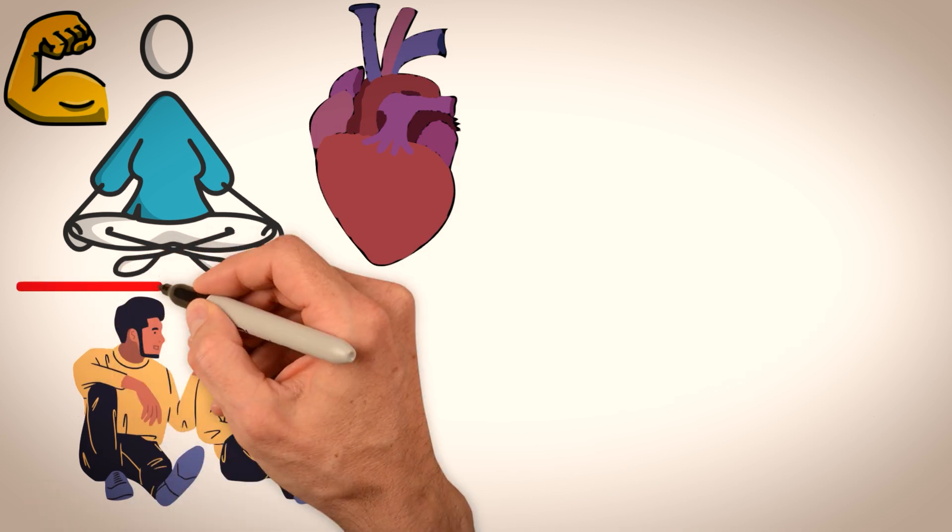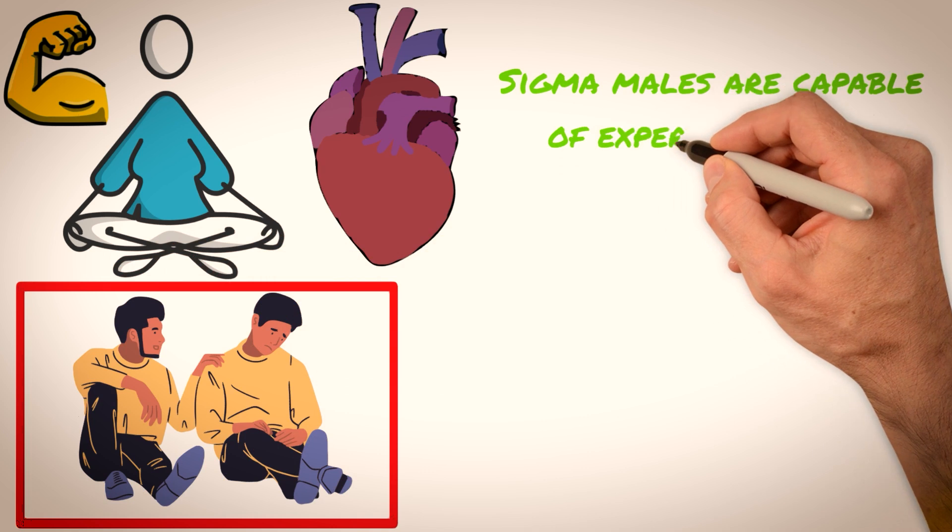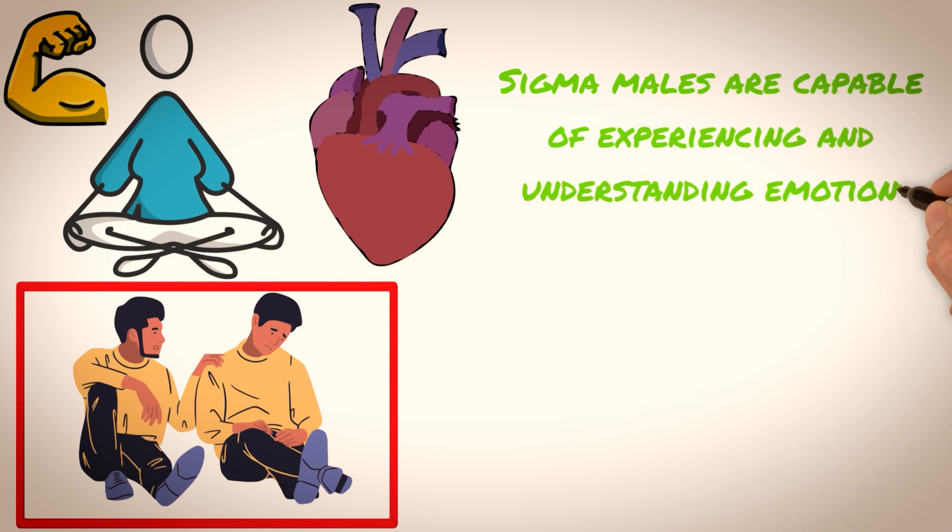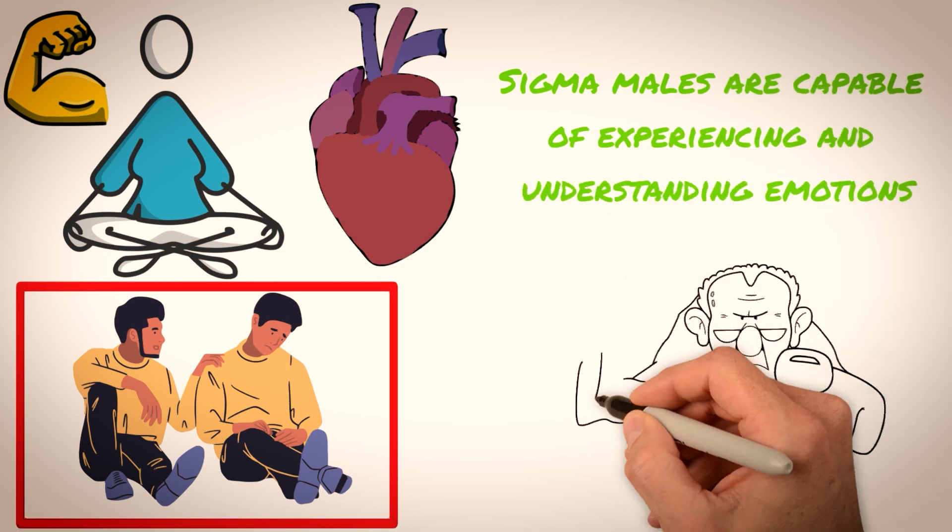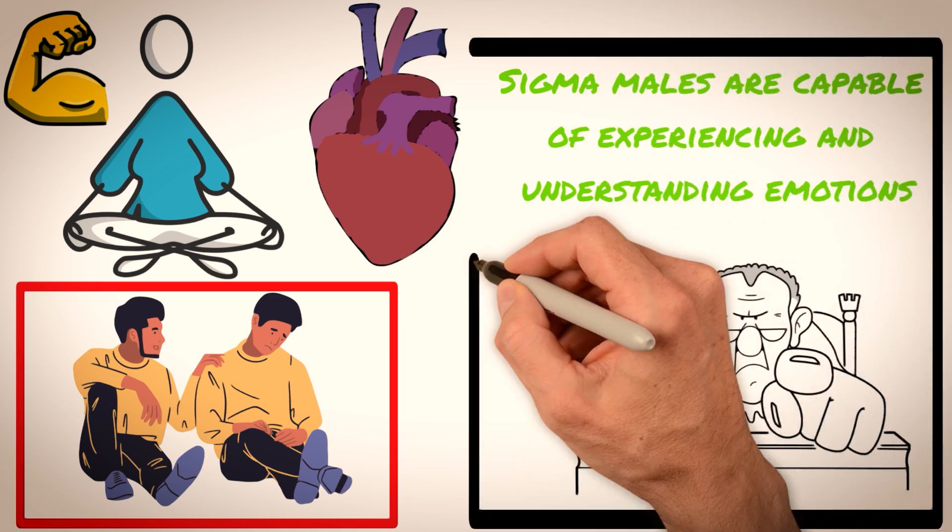However, this emotional detachment should not be mistaken for a lack of empathy or compassion. Sigma males are capable of experiencing and understanding emotions, but they simply choose not to let their emotions cloud their judgment or influence their decision-making process.